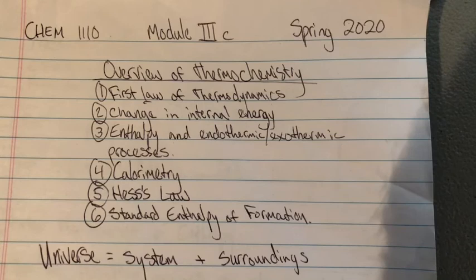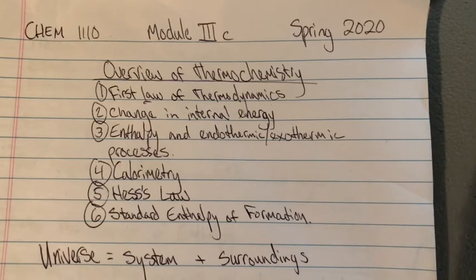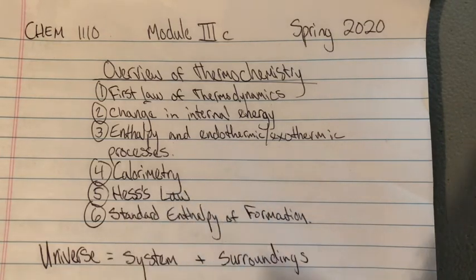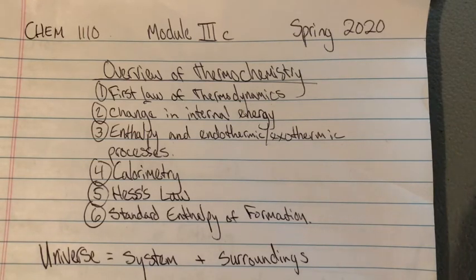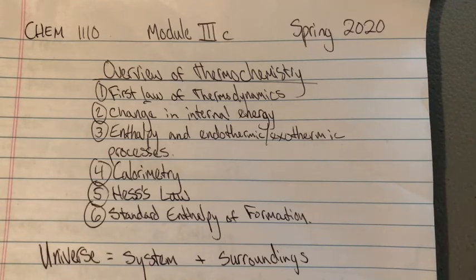Fourth is calorimetry — the study of breaking down particular components with the use of oxygen and seeing how much energy is released upon that breakdown. Fifth is Hess's law of summation — taking the sum of all the different enthalpies of reaction, or heat of formation for each particular component. Finally, looking at the standard enthalpy of formation at 25 degrees C and one atmosphere — standard conditions.